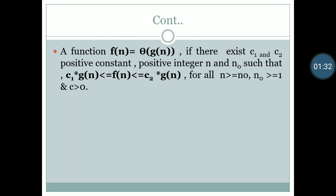For the definition: a function f(n) is equal to Theta of g(n) if there exist c1 and c2 as positive constants, and n0 as a positive integer, such that c1 * g(n) ≤ f(n) ≤ c2 * g(n) for all n ≥ n0, where n0 ≥ 1 and c1, c2 > 0.